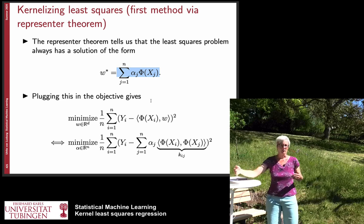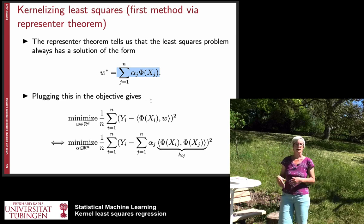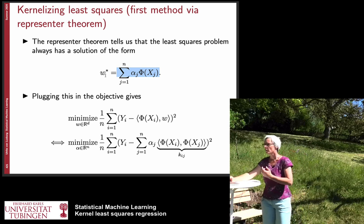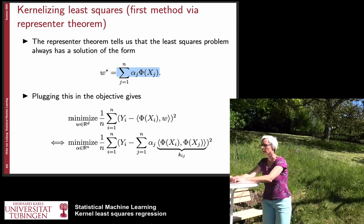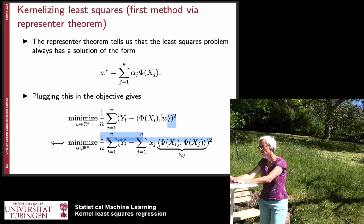And now of course, so we can exploit this now and plug it into our optimization problem. So wherever we had w, we now plug in this linear combination. And this results in the following, so here is our optimization problem, the original one where we have w.